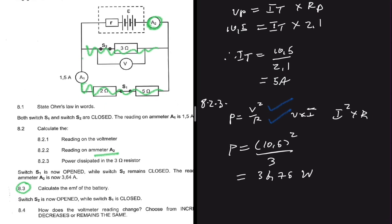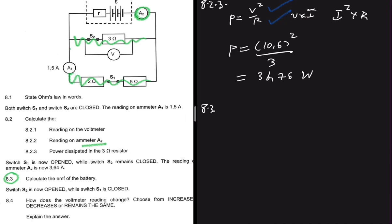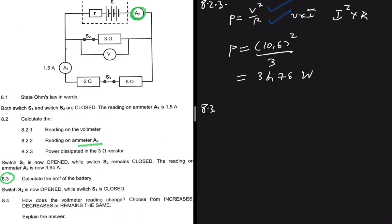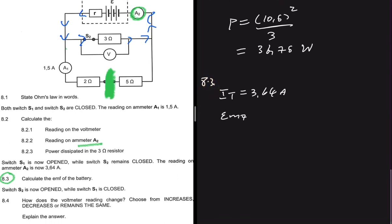Now for 8.3, which we're really interested in: switch S1 is now open while switch S2 remains closed, and the reading on ammeter A2 is now 3.64 amperes. When S1 is open, the current is no longer passing through that branch, so all the current flows through the 3Ω resistor only. Our total external resistance is now 3Ω.